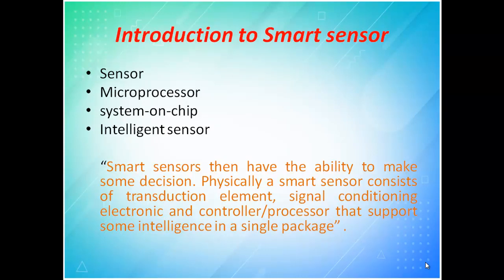An introduction to smart sensors: a smart sensor should have a sensor and a microprocessor. When a sensor senses any analog signals like temperature, pressure, or humidity, that is given to a processor which processes the information. When this combination is brought onto a single board, we call it a system on chip. The system on chip is nothing but a sensor combined with a processor.